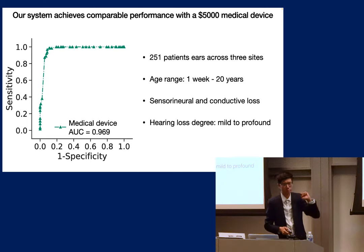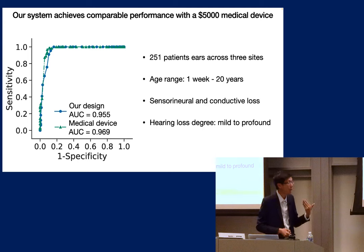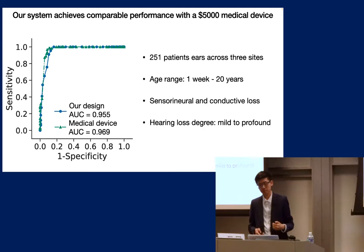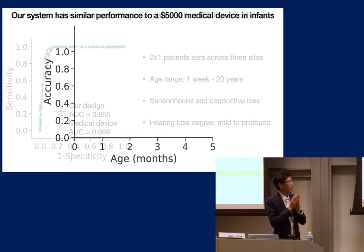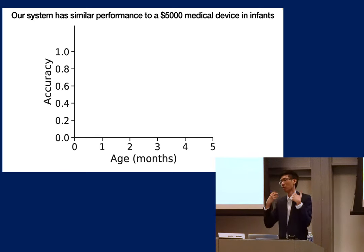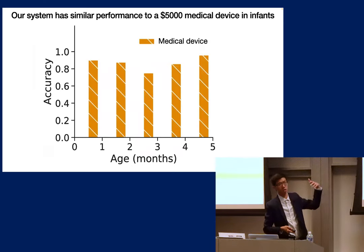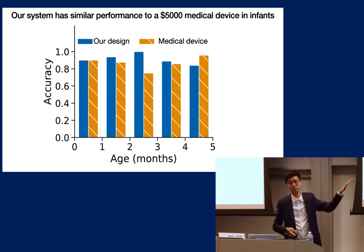The system was tested on 251 patient ears across three clinical sites, ages one week to 20 years. We ran both the traditional $5,000 clinical device and our low-cost device in parallel. The AUC performance of our device is clearly comparable to the $5,000 device, at orders of magnitude lower cost. In the most critical subgroup — infants zero to six months — our device's performance is also comparable to the clinical standard.